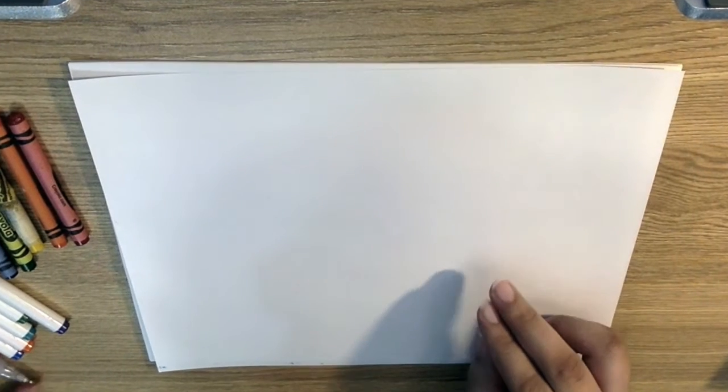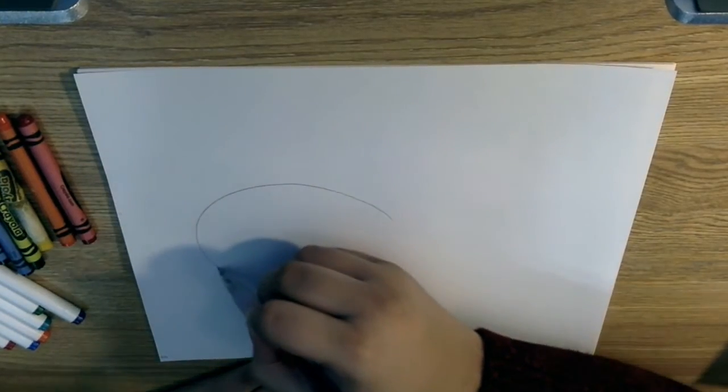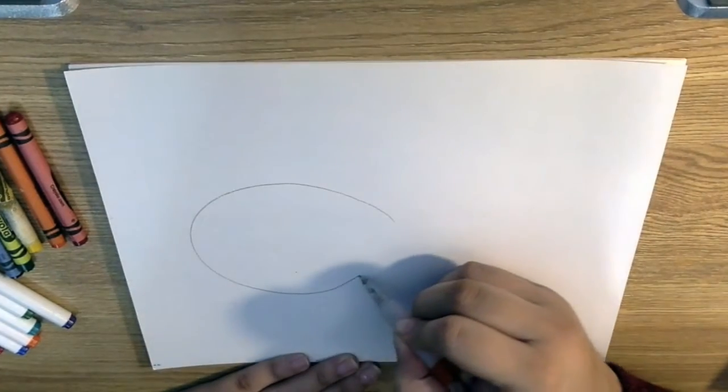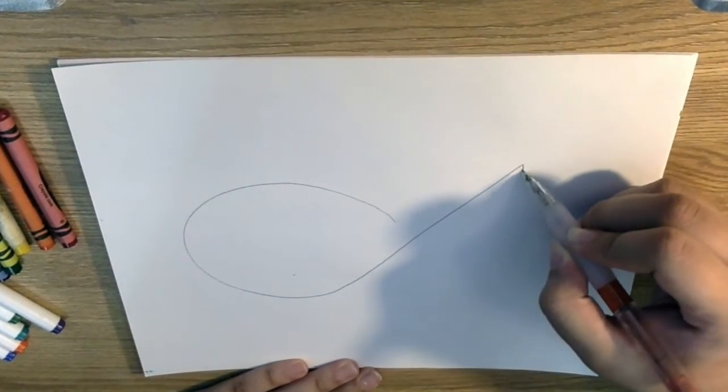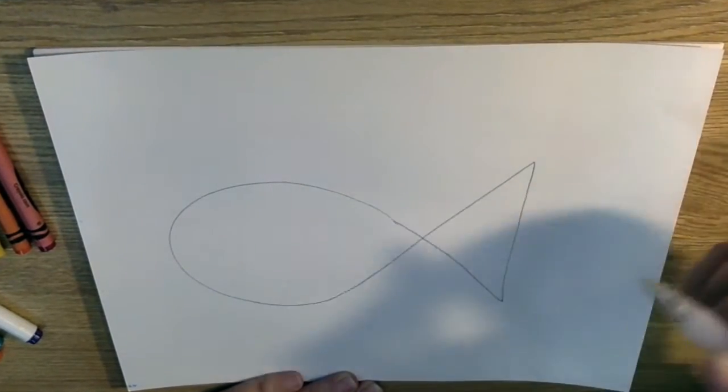Set your colors to the side and grab your pencil. We'll start by drawing our fish first. So make an oval shape, bring it around, triangle, and connect it.